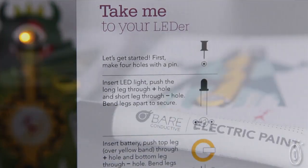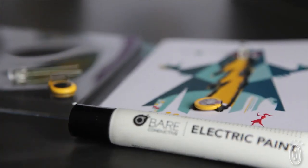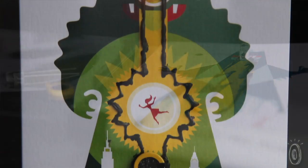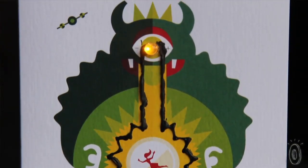They guide you through attaching the LED and the battery and then soldering them and drawing a working circuit with the electric paint. As soon as the paint dries, the LED will start to blink.